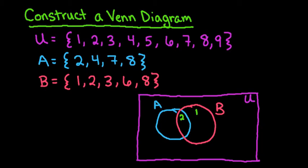The 3 because it's just in U and B it would go over here in B but not overlapping in A.